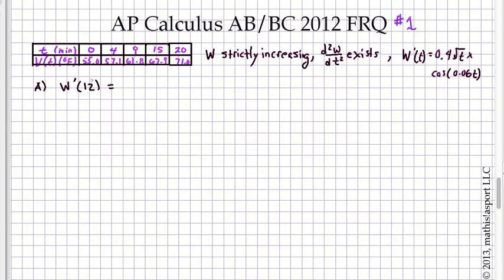We obviously don't have a function to work with to calculate the instantaneous rate of change at T equals 12. And so we're going to have to do our best to guesstimate. And the two relevant pieces of data we have, we know the value at T equals 9 and the value at T equals 15 of the original function.